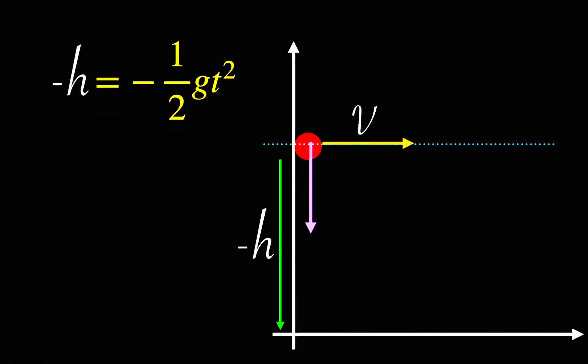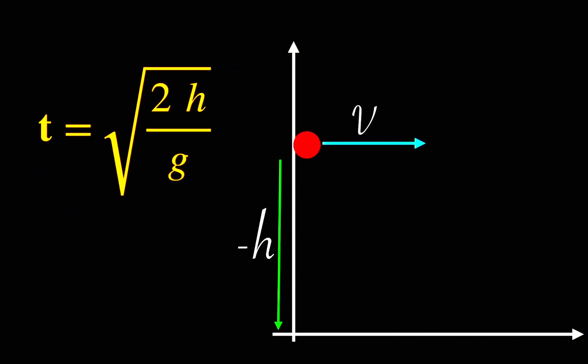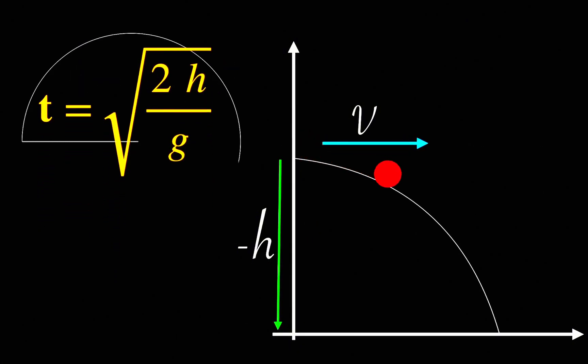Now, if we rearrange this equation and solve for time, we get t equals square root 2h over g. The time that we found is the time the object stays in the air before it hits the surface of water.